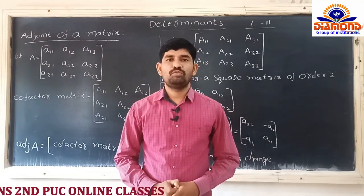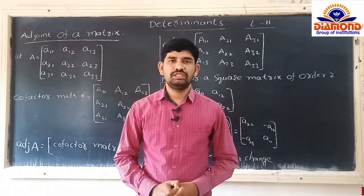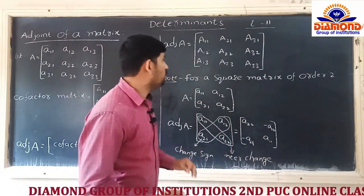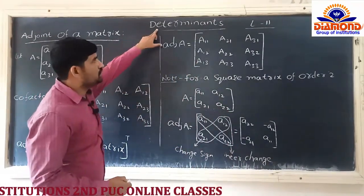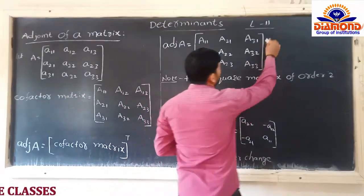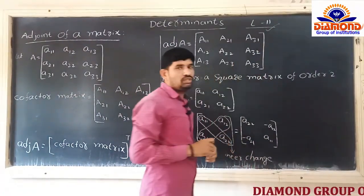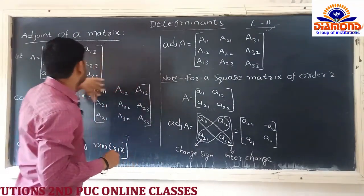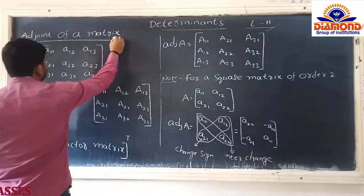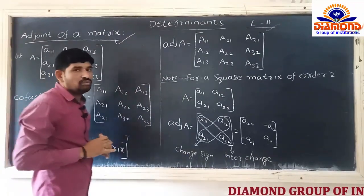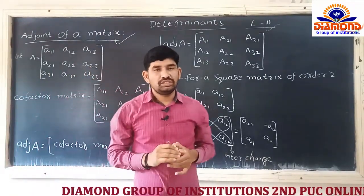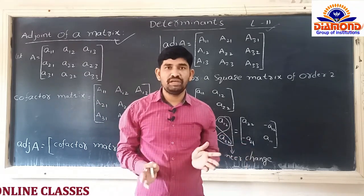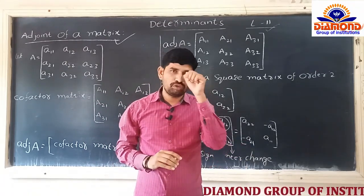Hello friends, welcome to Diamond Group of Instructions Online Classes. I am Goindra, Senior Lecturer in Mathematics. Today we are going to continue the chapter on Determinants. This is Lecture No. 11. We have completed 10 lectures already. Now we are taking an important concept: Adjoint of a Matrix, which is very important for NCERT as well as JEE. For CET also, Adjoint of a Matrix and Inverse of a Matrix are both very important.